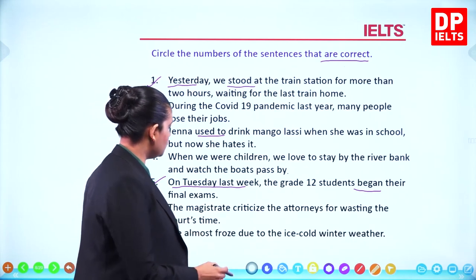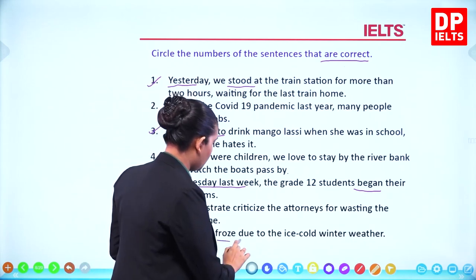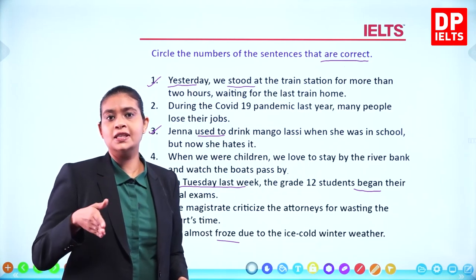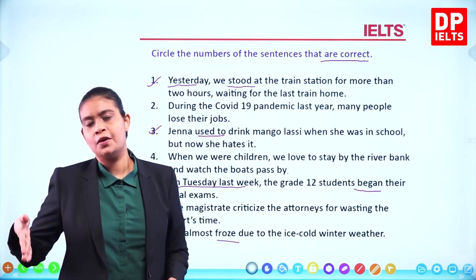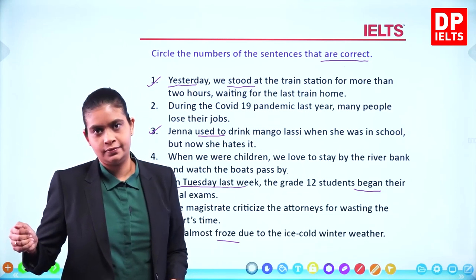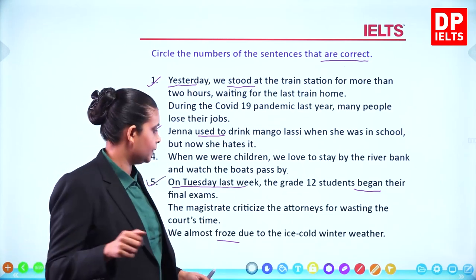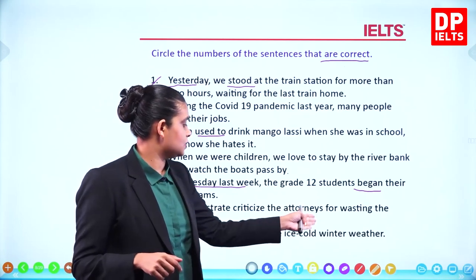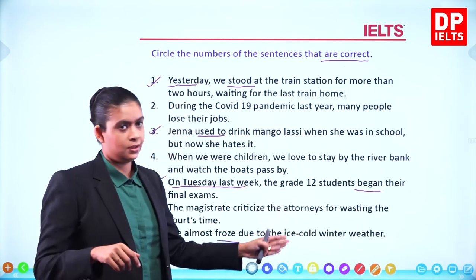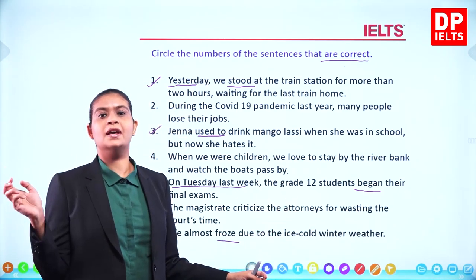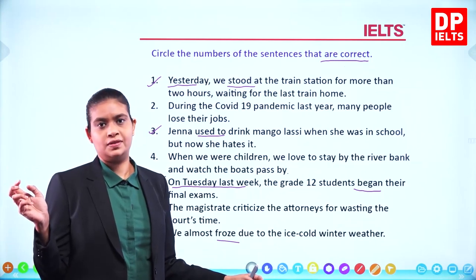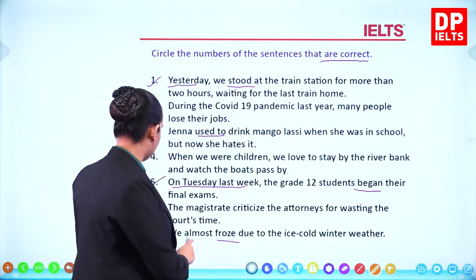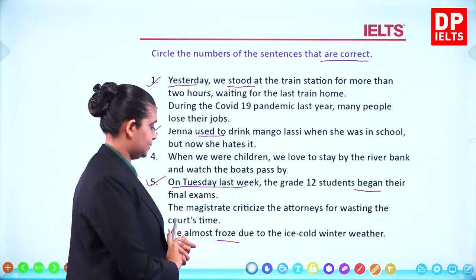Sentence seven: 'We almost froze due to the ice cold winter weather.' Freeze — froze — frozen. It clearly happened in the past. So sentence seven is also correct.